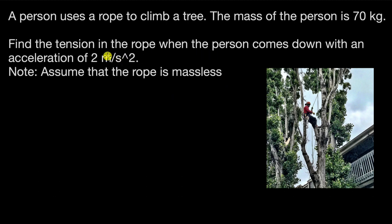Now, in this one, we know that the person is coming down with an acceleration of 2 meters per second square. So if we try to model the person with just a point object, we know that the acceleration here is 2 meters per second square. And we also know the mass of the person, which means we know the weight.